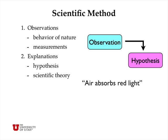The second part of the scientific method is to provide explanations for the observations. We do this initially in the form of hypotheses, but generally if a hypothesis stands the test of time through many different tests or experiments, it evolves into a scientific theory.